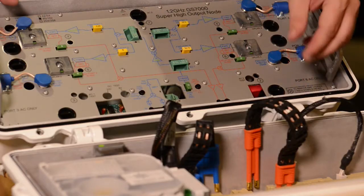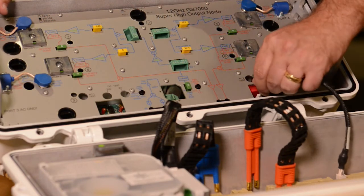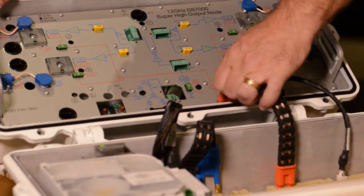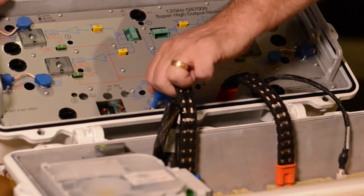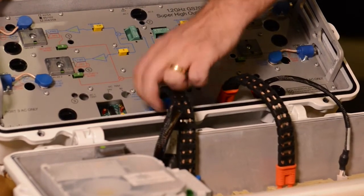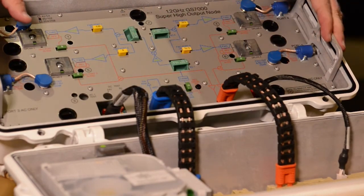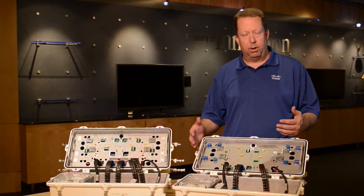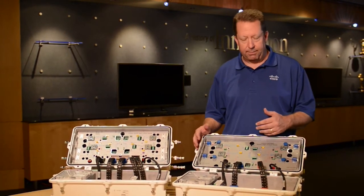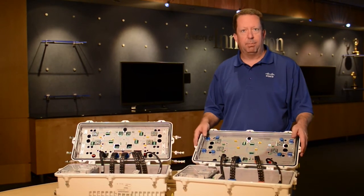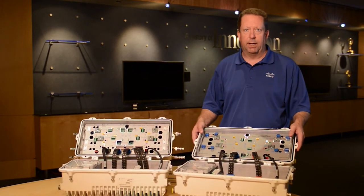Last step is to reinstall the cabling. And then the final step would be to go back through, do a final balance and check, verifying levels, operation, and rebalance. And that is how you change the diplex filters and the frequency splits of a GS7000.